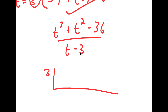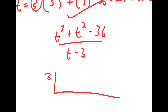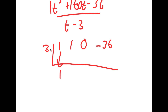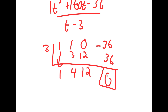We put 3 on the side and then write our coefficients. The first coefficient is 1, the second coefficient is also 1, the third coefficient is 0 since there's no t term, and the last one is negative 36. Bringing the 1 down: 3 times 1 is 3, 1 plus 3 is 4, 3 times 4 is 12, 0 plus 12 is 12, 3 times 12 is 36, and negative 36 plus 36 is 0. So we have a remainder of zero.